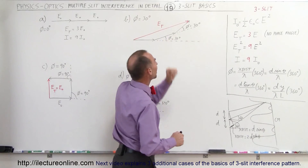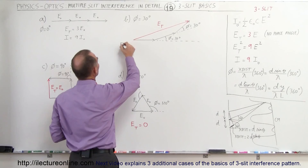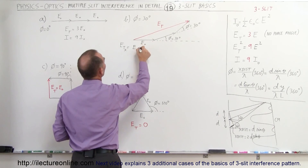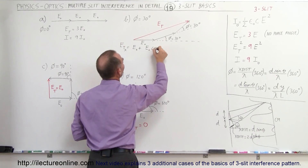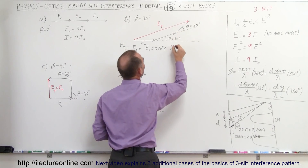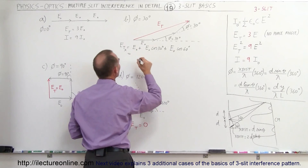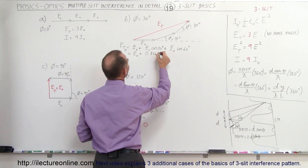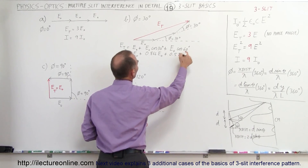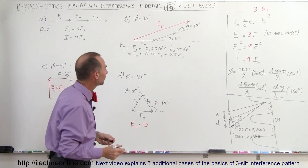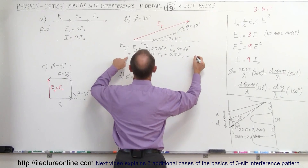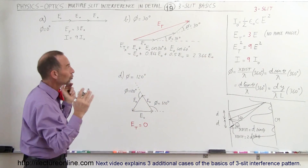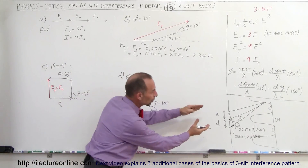What happens when there's a 30-degree phase angle? Now we have to add those up vectorially. The x-component of the total electric field is: E₀ (first slit, pointing along x), plus E₀ times cos(30°) for the second slit, plus E₀ times cos(60°) for the third slit. Adding those together: E₀ plus 0.866 E₀ plus 0.5 E₀ — since cos(60°) = 0.5 and cos(30°) = 0.866 — gives us 2.366 E₀ in the x direction. That is the x-component of the total electric field strength of energy going through three slits.